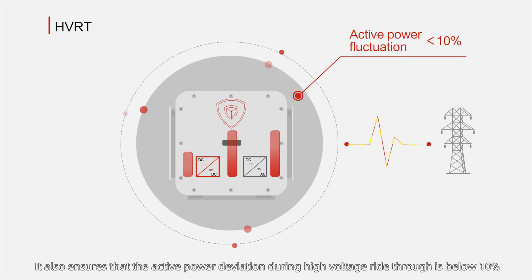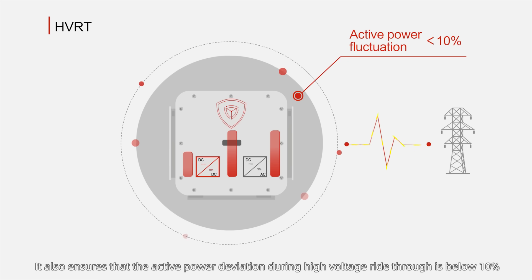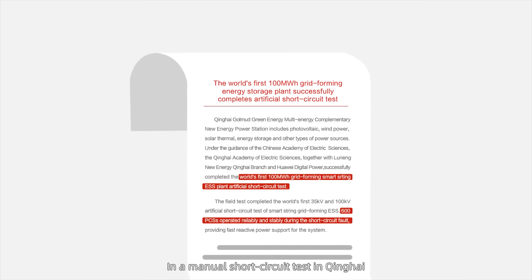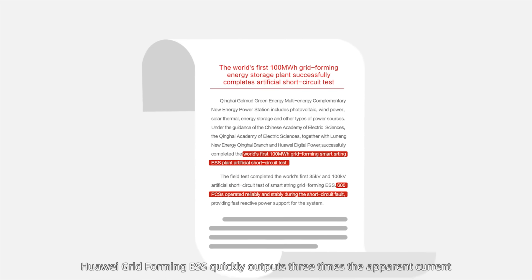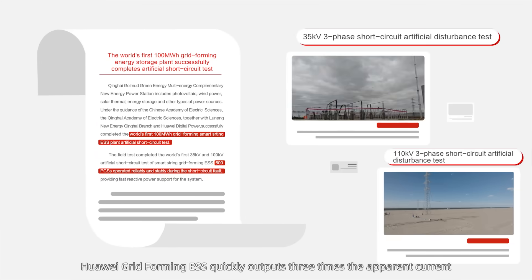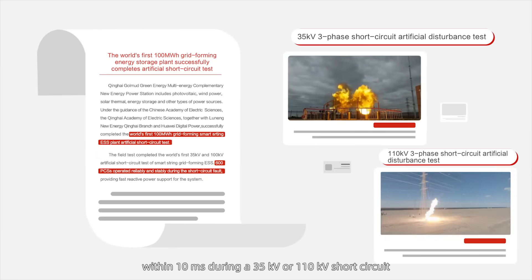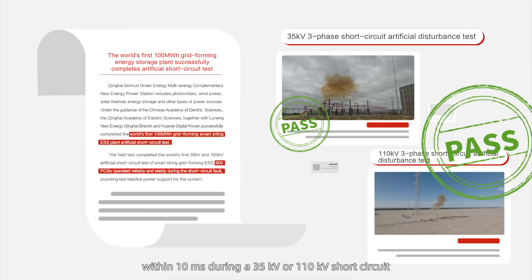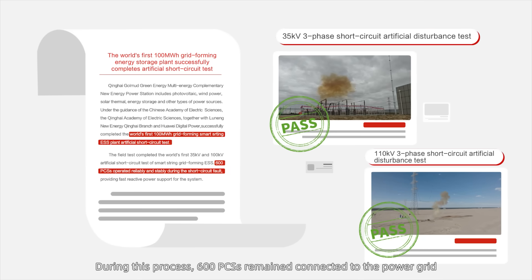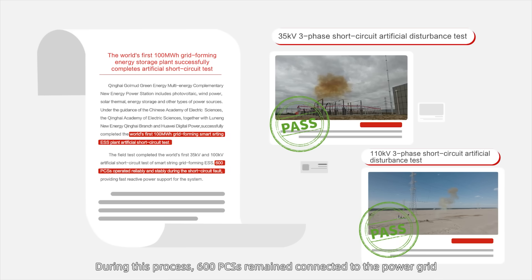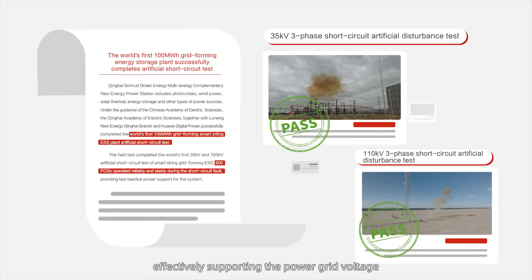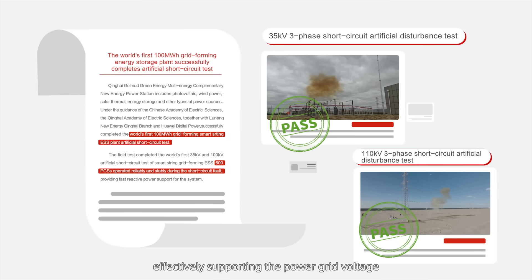It also ensures that the active power deviation during high voltage ride-through is below 10%. In a manual short circuit test in Qinghai, Huawei Gridforming ESS quickly outputs three times the apparent current within 10 milliseconds during 35 kilovolt or 110 kilovolt short circuits. During this process, 600 PCS's remained connected to the power grid, effectively supporting the power grid voltage.